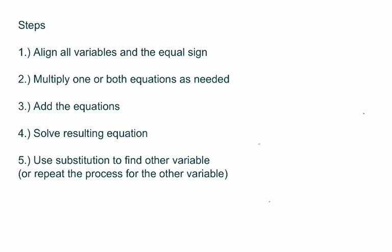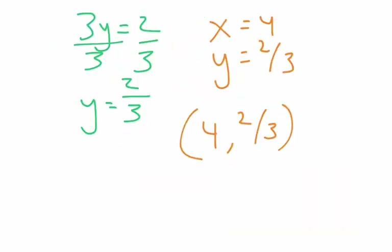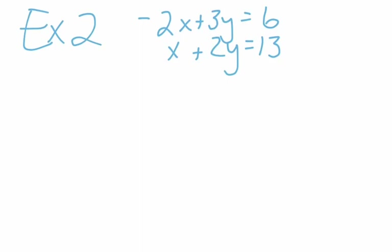Now we get to the thinking step. We have to multiply one or both equations as needed, and in order to do that we need to make decisions: which variable do I want to eliminate? There's no right or wrong answer — you can choose X or Y. In this case, one of them is easier. I'm looking at the X's and observing that I have a negative two and a positive one. I like that there's a negative and a positive, but I don't have the same number.